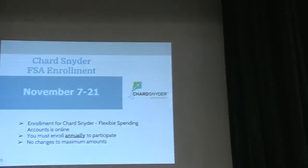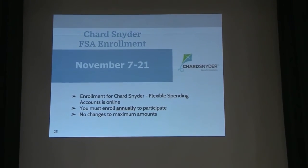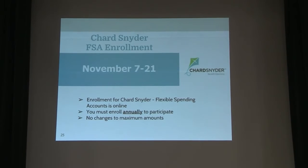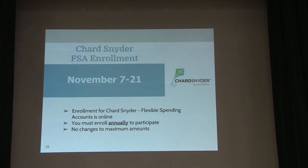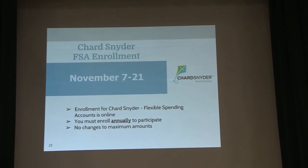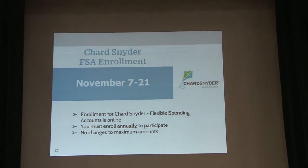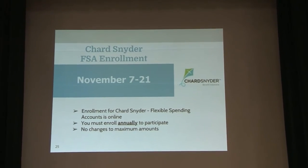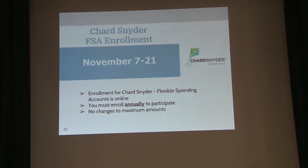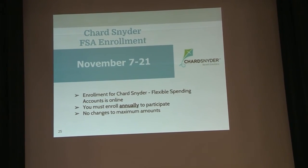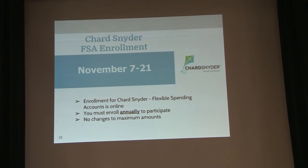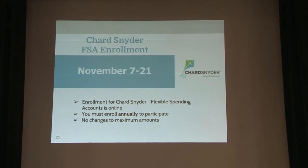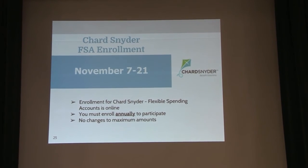November 7th through the 21st is also the timeframe to enroll in the Shard-Snyder plan, which is important for people who enroll in the dependent care plan — some of your childcare expenses, that kind of thing. You can have up to $5,000 tax-free put into the Shard-Snyder account deducted from your paycheck, and also up to $2,500 per year for unreimbursed medical expenses. The key thing, just as it has been every year, is that you have to re-enroll every year — it's not automatic, we need a new form each year.